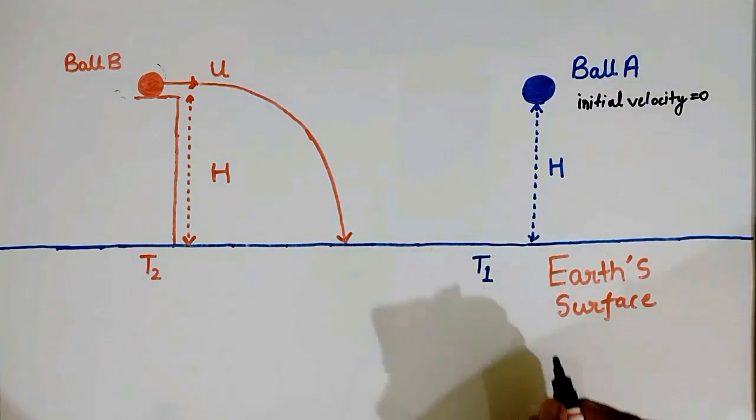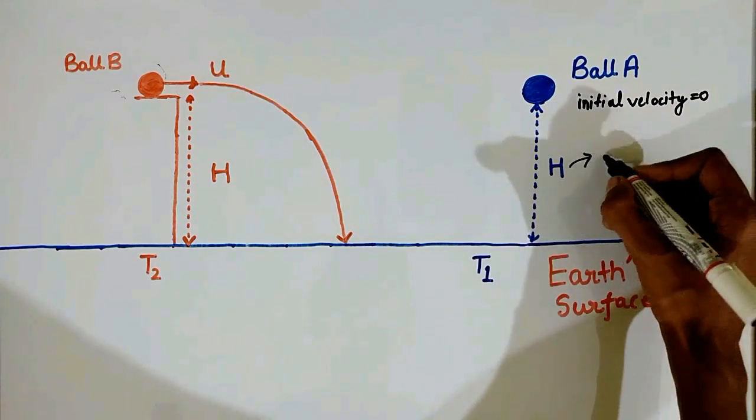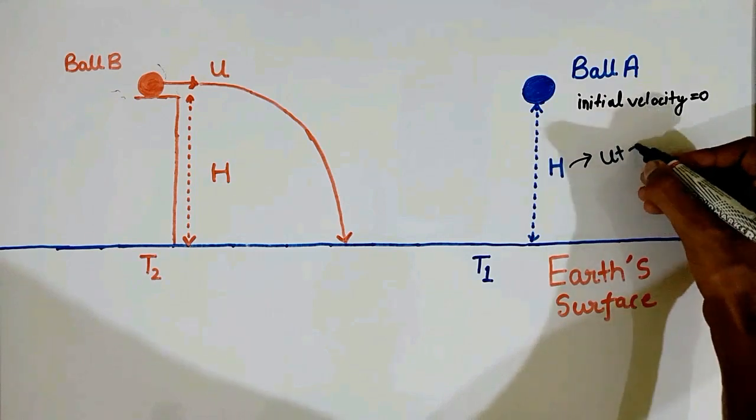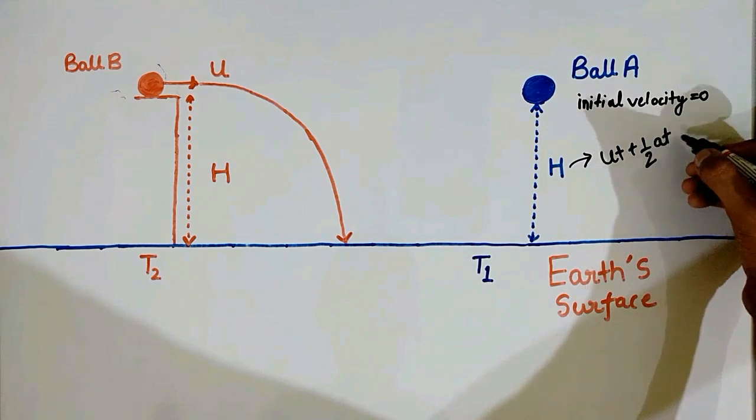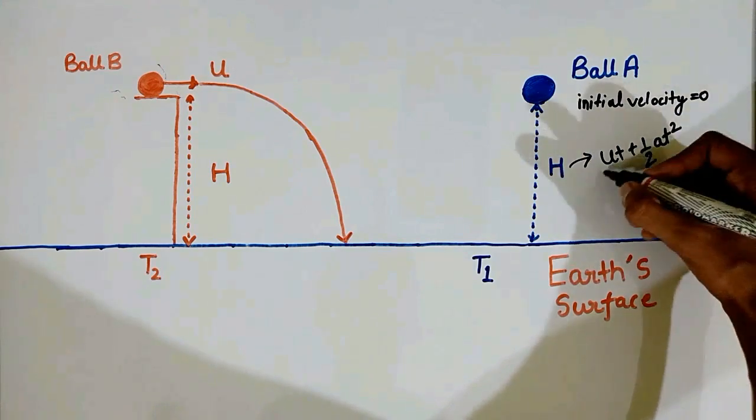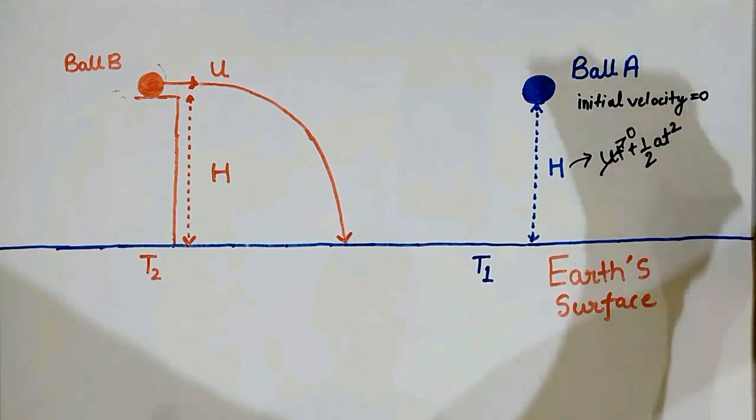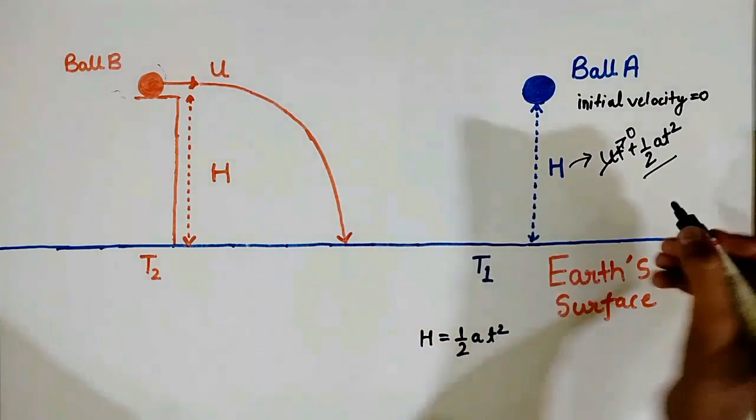Now to calculate T1 we will use equation of motion. We can equate the displacement with initial velocity into time taken plus half times acceleration into time squared. We can eliminate this term. So the displacement which is h in this case will be equal to half times acceleration into time squared.